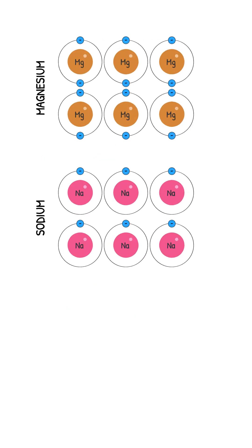magnesium and sodium are both electrical conductors, however magnesium has a higher electrical conductivity than sodium. This is because,